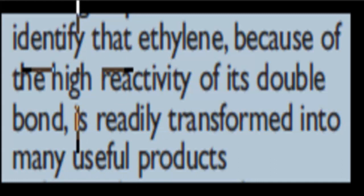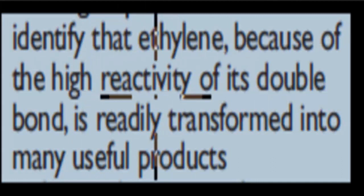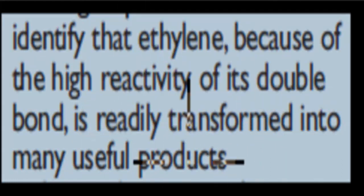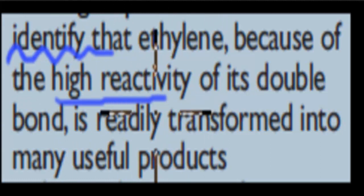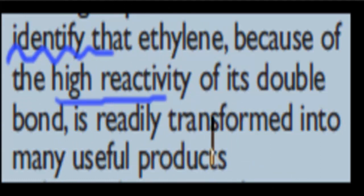The dot point says: identify that ethylene, because of the higher activity of its double bond, is readily transformed into many useful products. So we have to identify that ethylene, because of the higher activity of its double bond, can be used to make useful products — and that's what we'll talk about in this video.